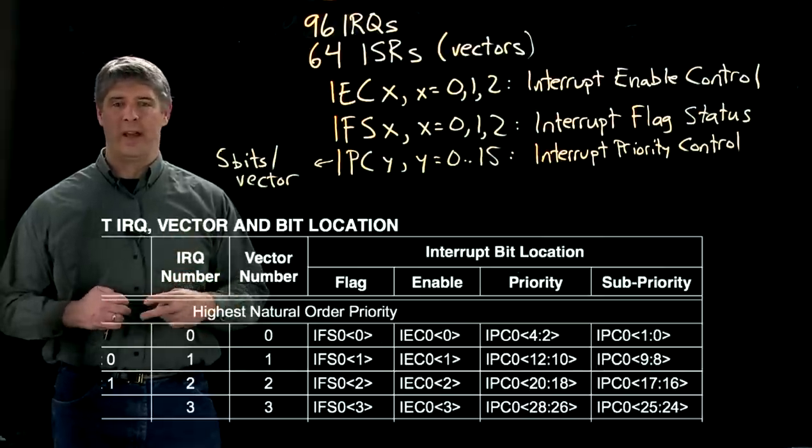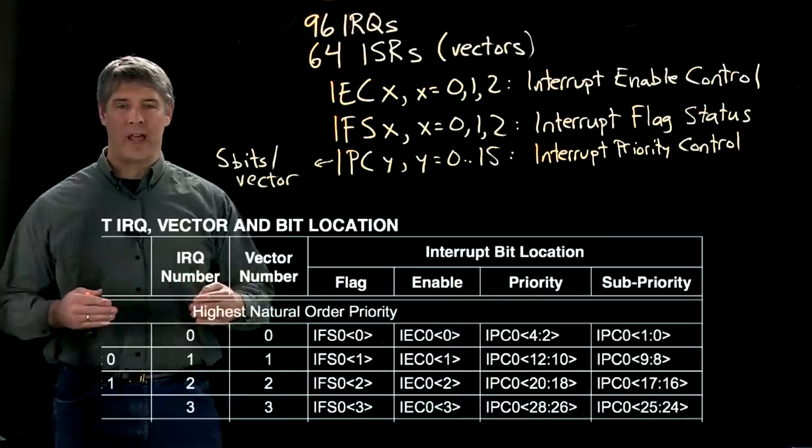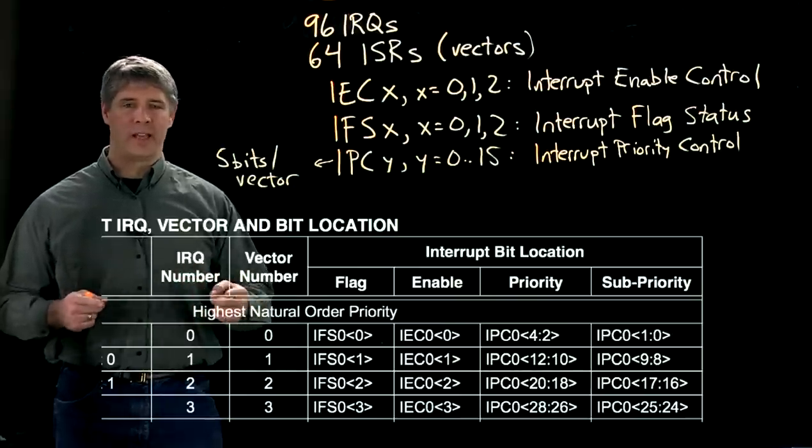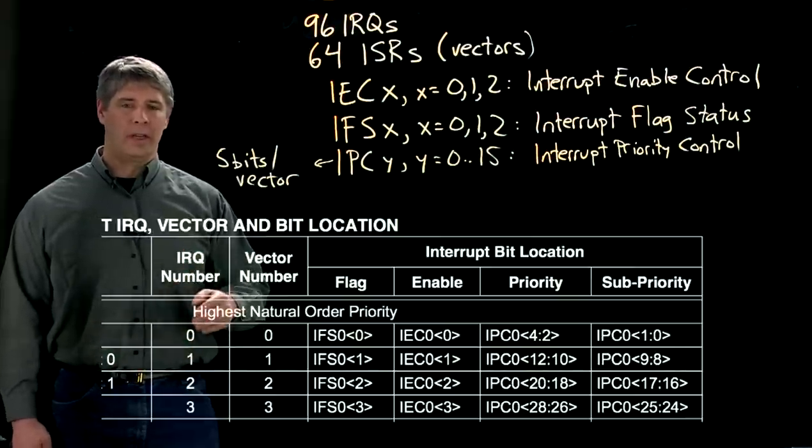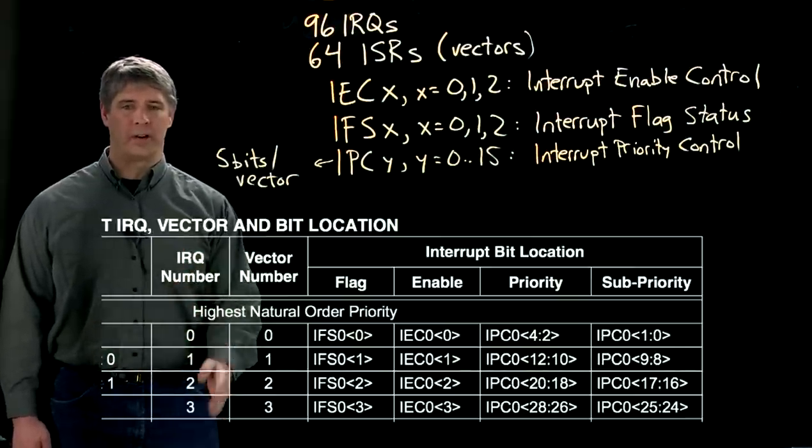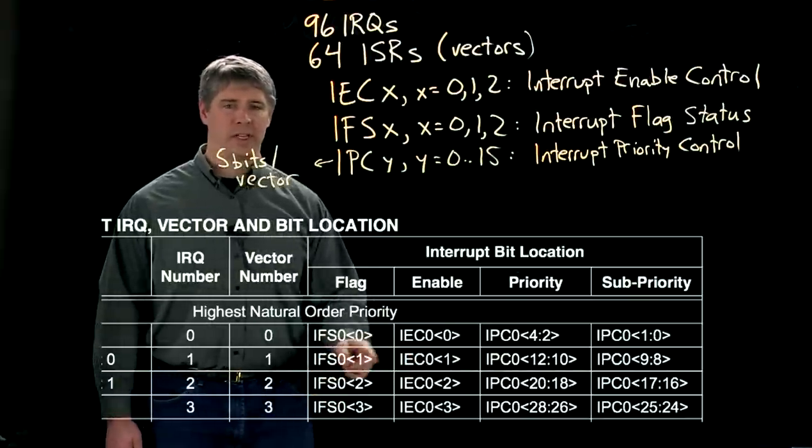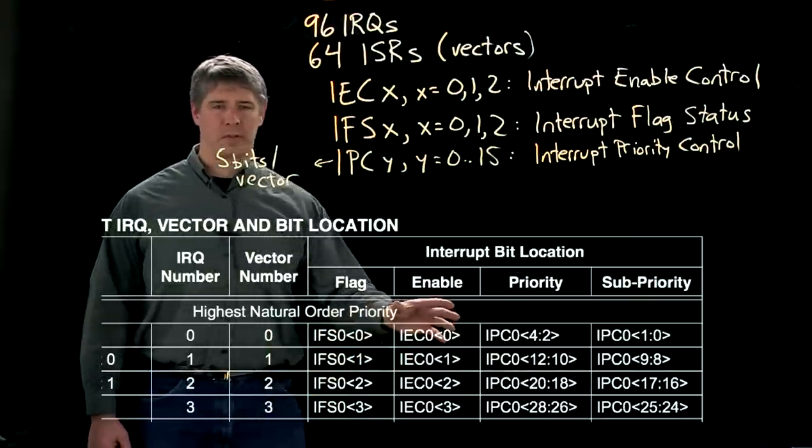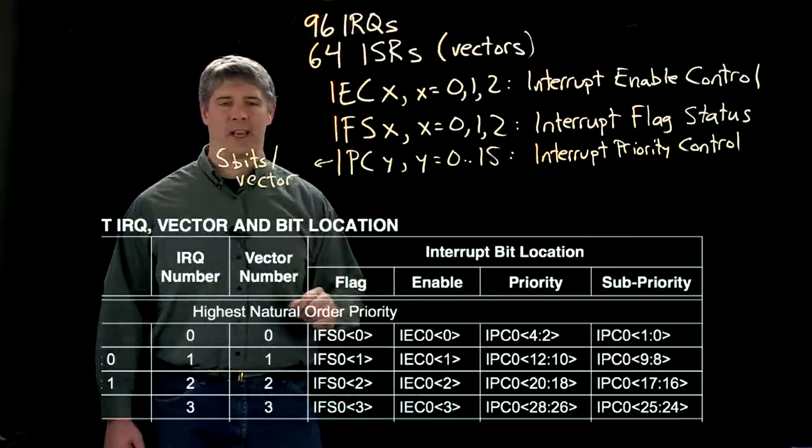On the other hand, if you have two interrupt service routines waiting to be addressed, whichever one has the higher priority and sub-priority will be attended to first. So here are four of our interrupt sources here. These are the bits associated with each of those interrupt service routines over here in the priority and the interrupt requests here in the flag and the enable.